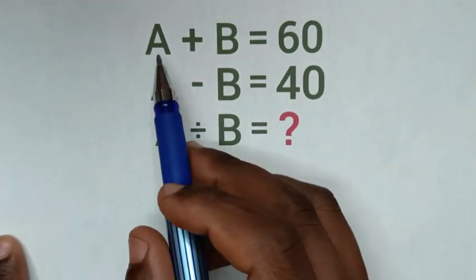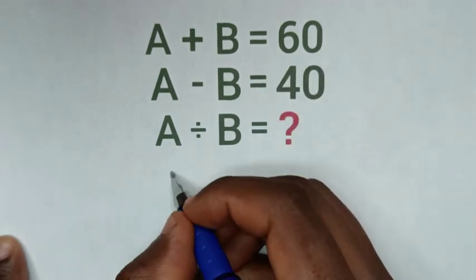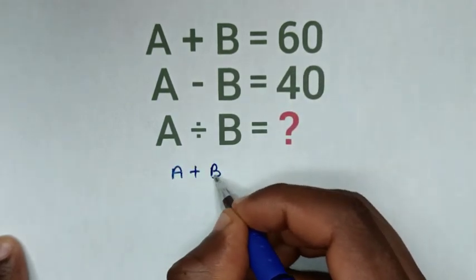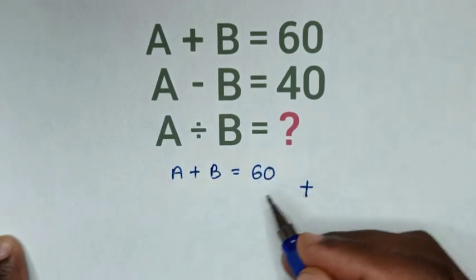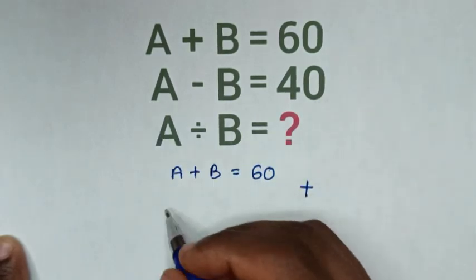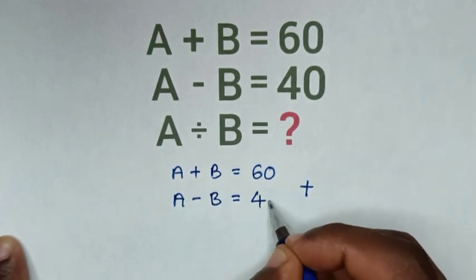From the first equation, A plus B equals 60, we add the second equation, A minus B equals 40.